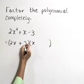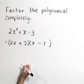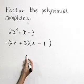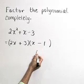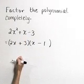I'm going to try a positive 3 and a negative 1. And let's quickly check our inner and outer products. 3x and a negative 2x sums to this middle term 1x.